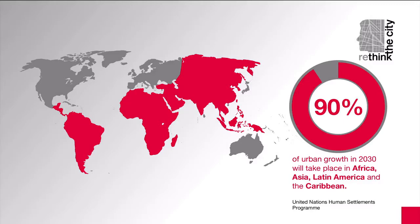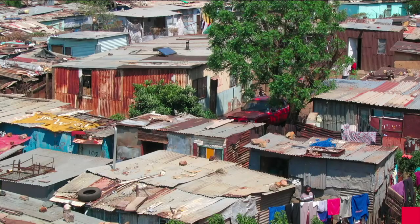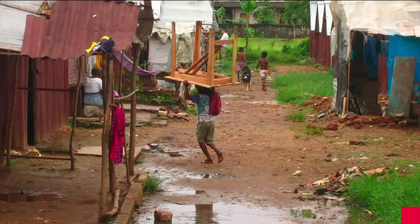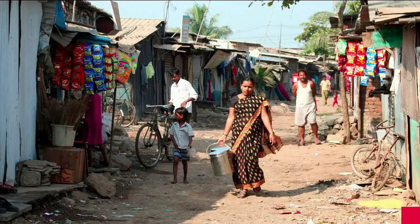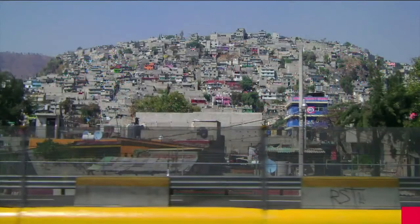A major urban problem in the Global South for many decades has been the widespread presence of slums and informal housing in bad conditions. This means poor physical quality of the dwellings and the surrounding areas, lack of basic sanitary services, and ultimately unhealthy and unsafe living conditions for huge numbers of people.